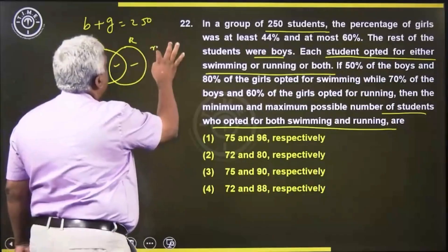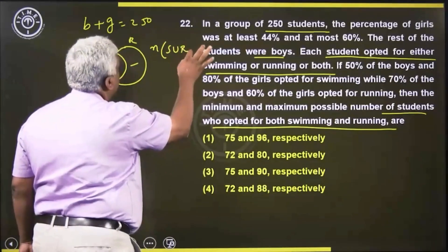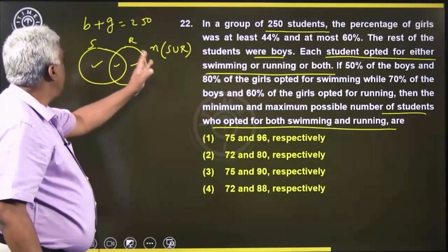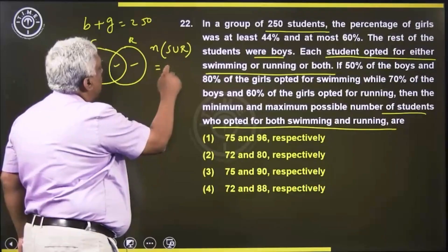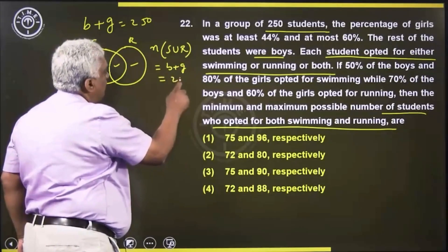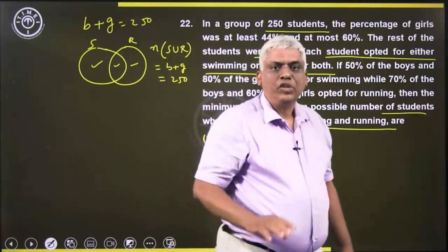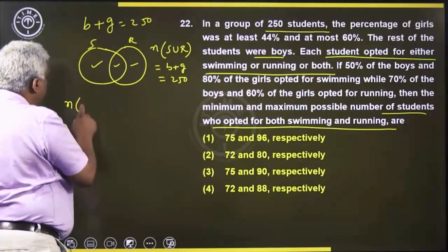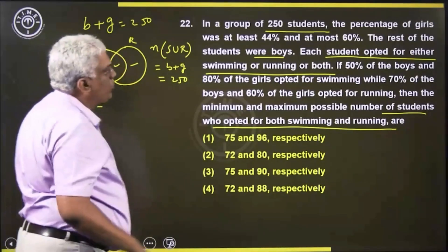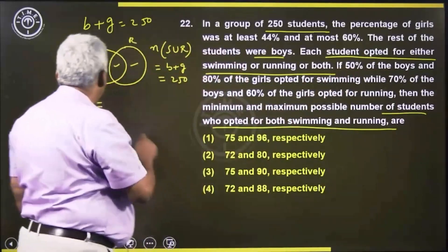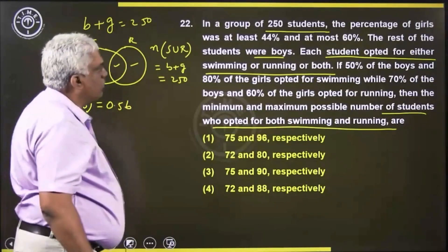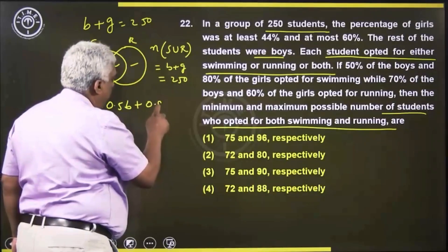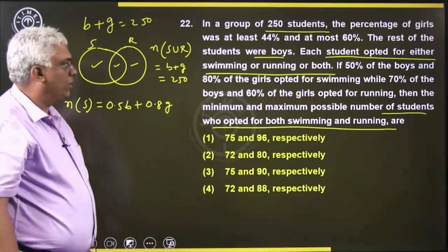The number of elements in swimming union running equals 250, since everybody is doing either swimming, only running, or both. The number of persons doing swimming is 50% of boys plus 80% of girls, that is 0.5B plus 0.8G.